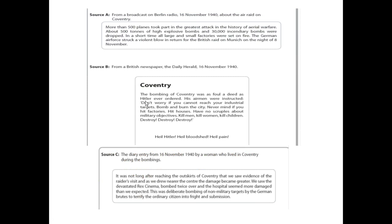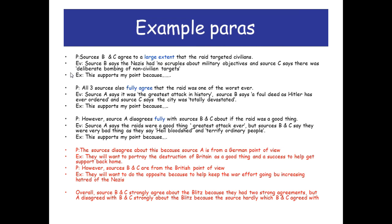So that's the established bit on what the sources agree or disagree about. With three sources, A must be compared with B and C, C must be compared with B and A, and B must be compared with C and A. Then we establish in a simple point-explain why they disagree: the sources disagree because source A is from a German point of view. They will want to portray the destruction of Britain as a good thing and a success to help get support back home.